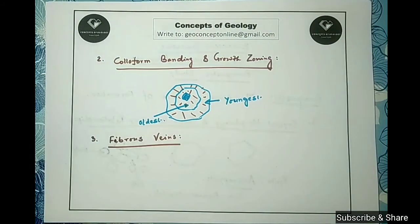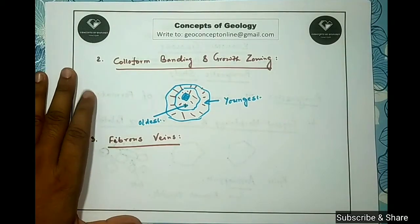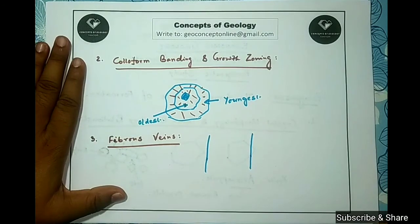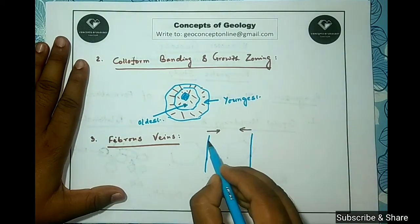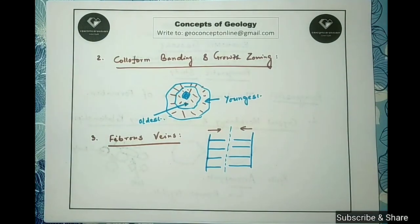The third procedure involves fibrous veins. Fibrous vein systems are common in open-space filling in low-grade metamorphic systems. At higher temperatures, the fibers become thermodynamically unstable and recrystallize into equidimensional polygonal crystals, so they are very common in sandstones and limestones. In the case of fiber growth, we may have four types of growing mechanisms, of which two are very common. The first is syntaxial growth, where the fibers grow inward from the wall rock toward the center.